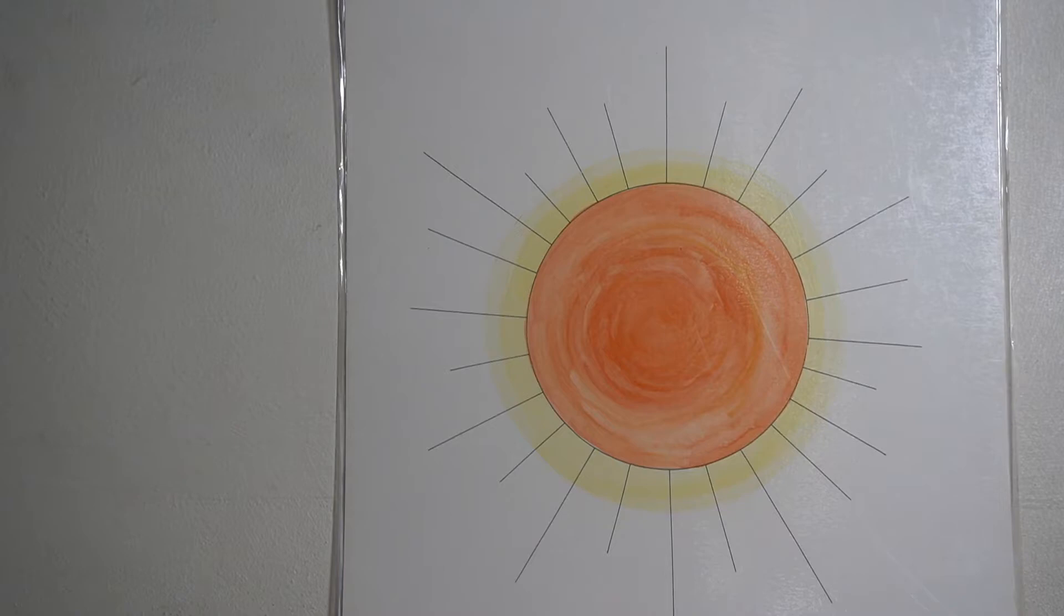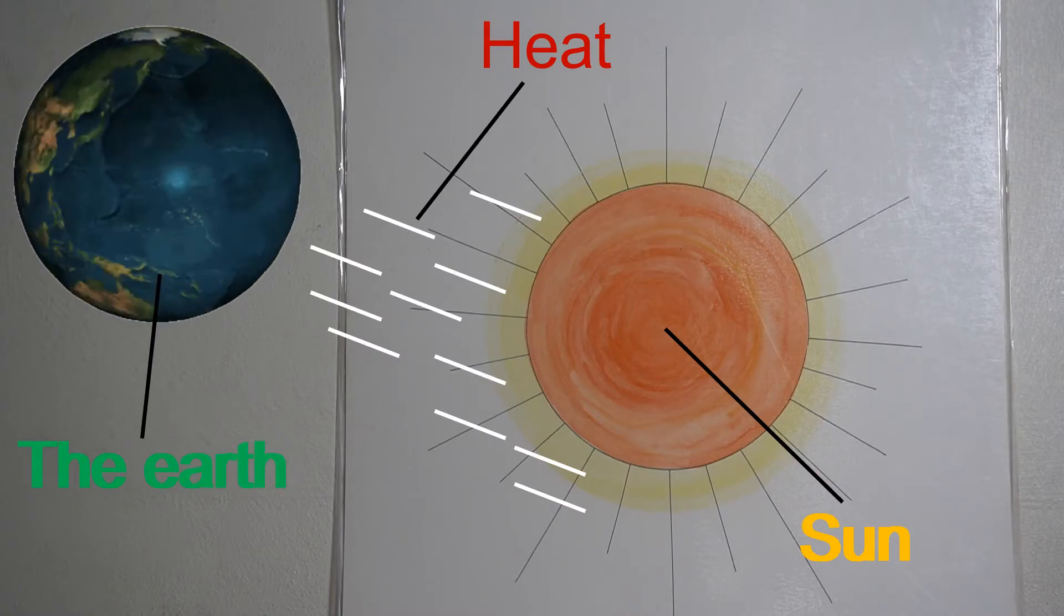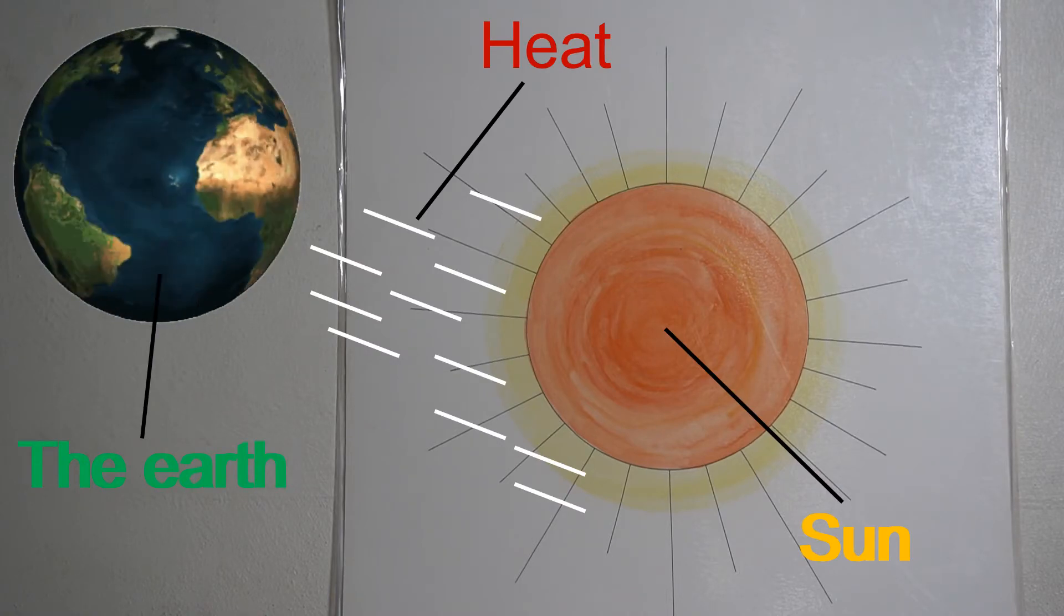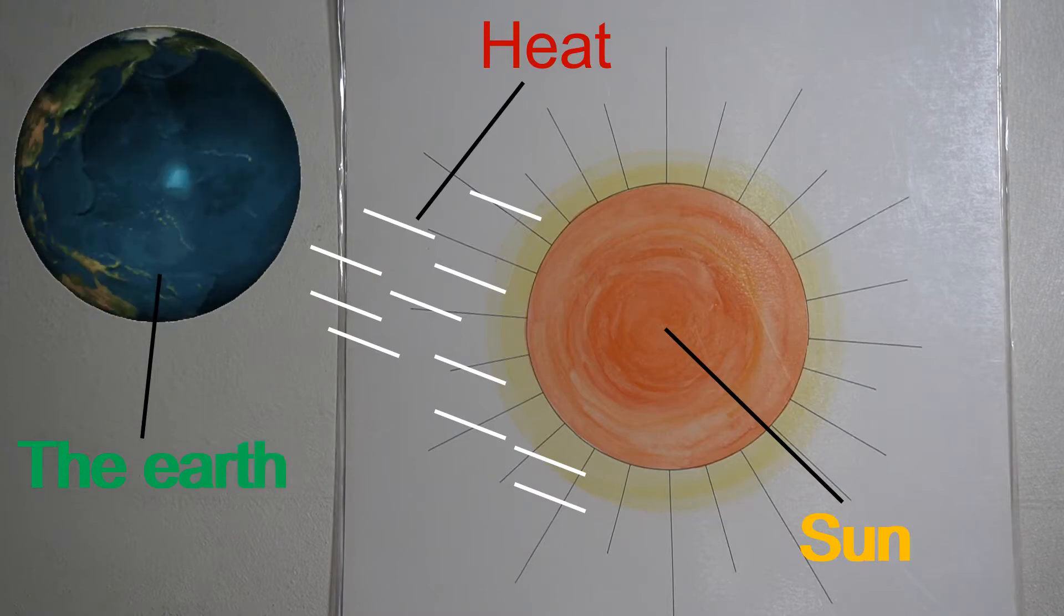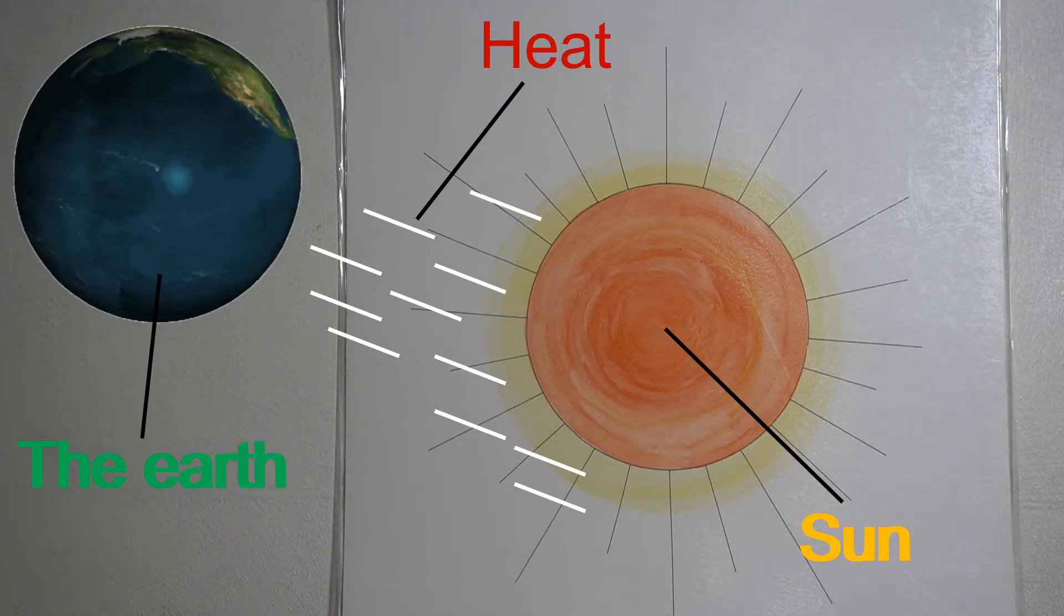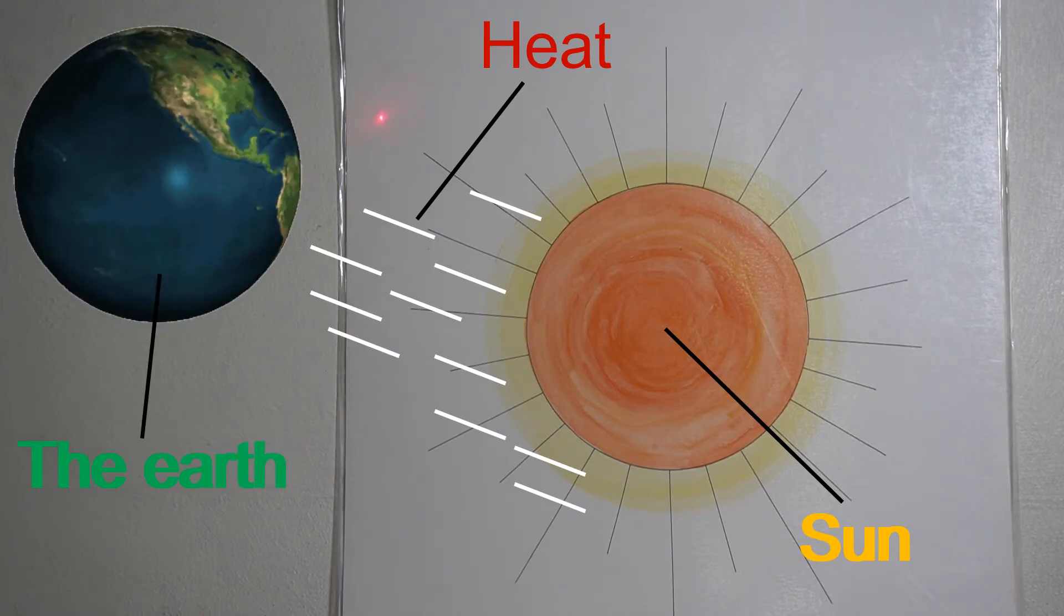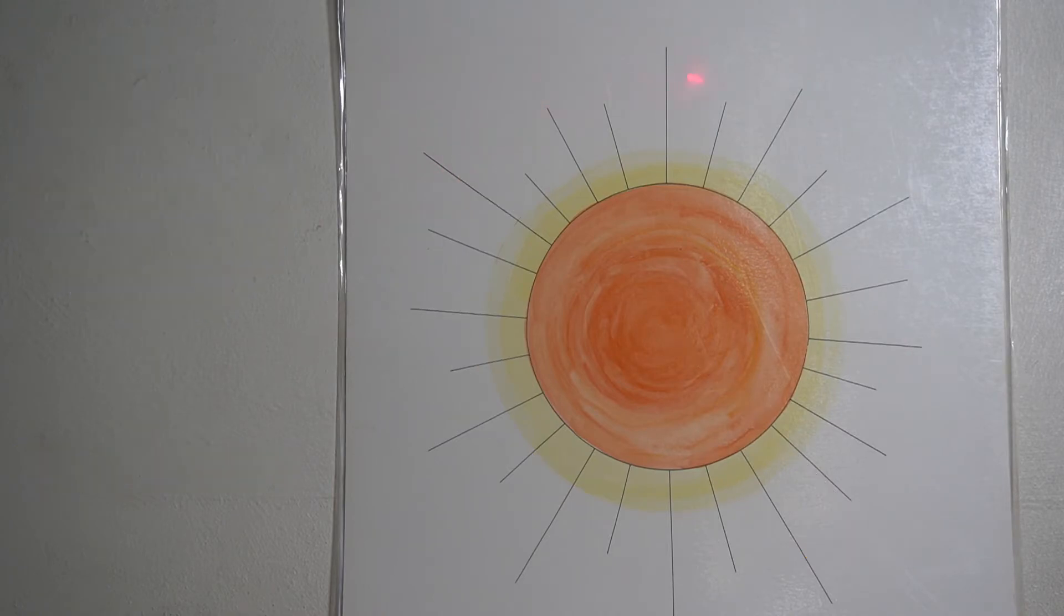Our earth receives a small part of the heat that emanates from the sun, because this energy gives heat to many other planets besides our own earth. So it's just a very little part of the energy from the sun, the heat and the light from the sun that our earth receives.